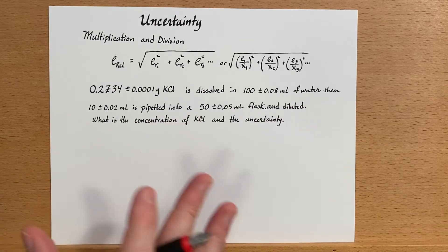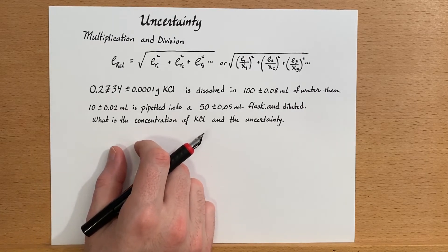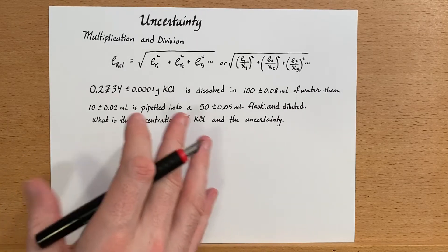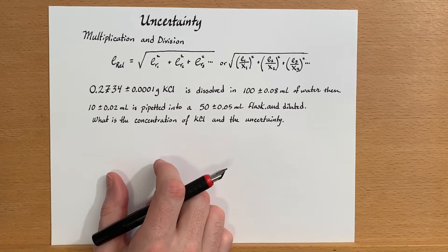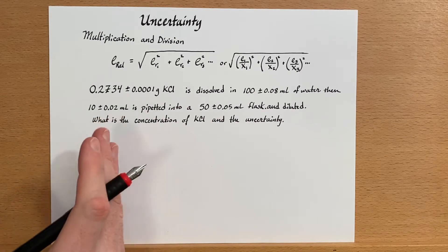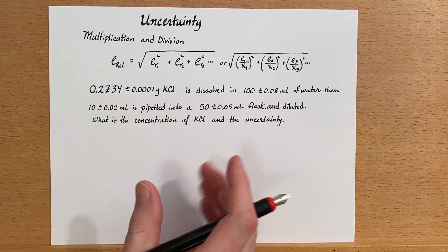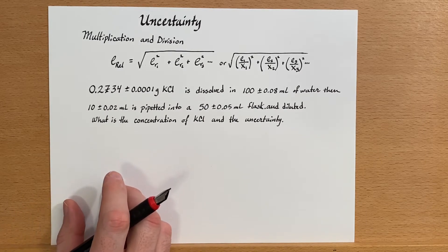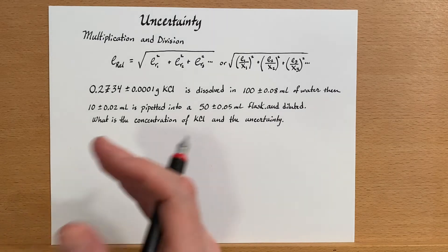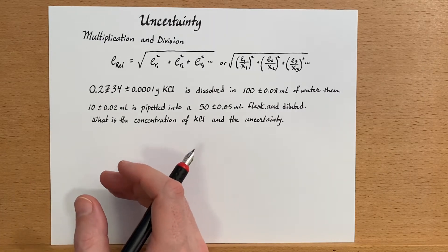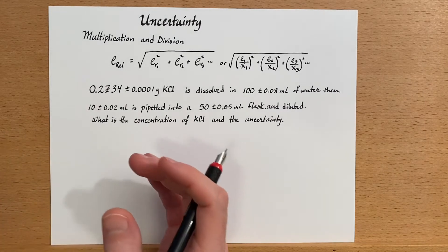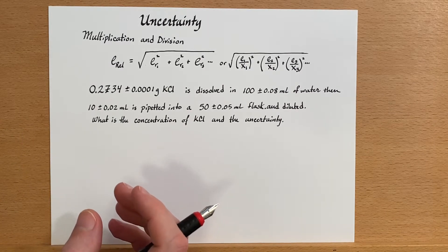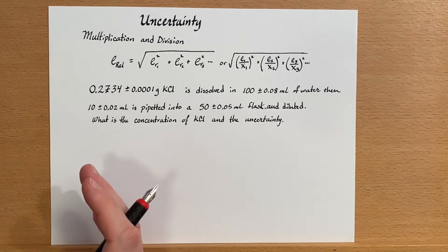Now whenever I'm doing one of these problems, I always like to solve the problem without considering the error at all. I just want to see what steps I go through in order to get the result, and that will let me know what I need to do for the error calculation. Is it all multiplication, division, or are there some addition, subtraction events in there? That's important when I'm propagating uncertainty.